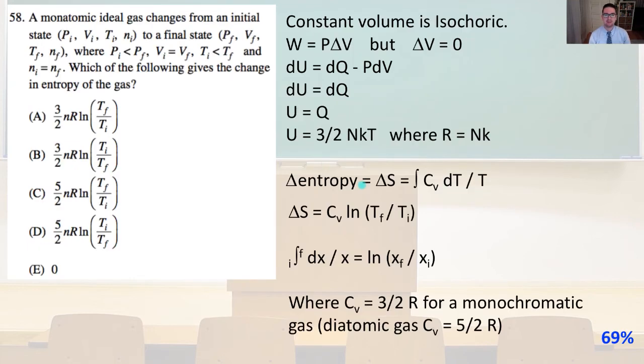Number 58, a monatomic ideal gas changes from an initial state, p_i, v_i, T_i, n_i, to a final state, p_f, v_f, T_f, n_f, where p_i is less than p_f, v_i equals v_f, T_i is less than T_f, and n_i equals n_f. Which of the following is the change in entropy of the gas? So constant volume, as the problem states, is isochoric,